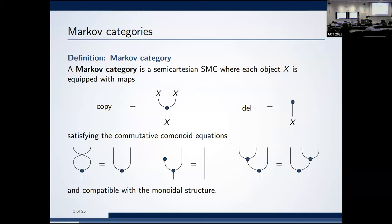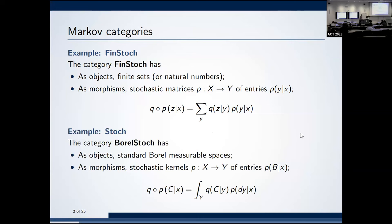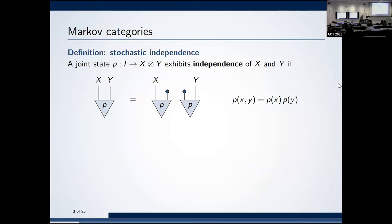Markov categories have copy and discard maps such that discard is natural because it's semi-Cartesian, with object comonoids. The main examples for probability are FinStoch — the category of stochastic matrices — and Stoch, the category of Markov kernels with composition. These were covered in the tutorial yesterday and in two more talks today, so let's instead recall some concepts of independence.